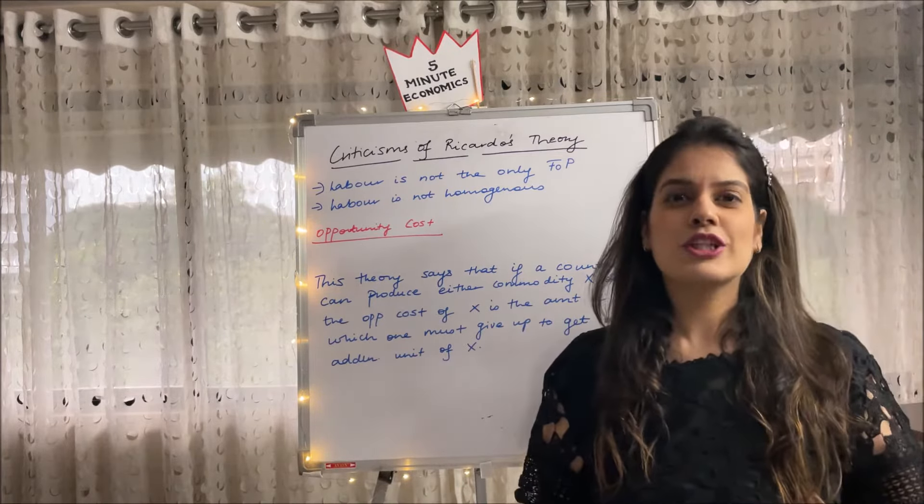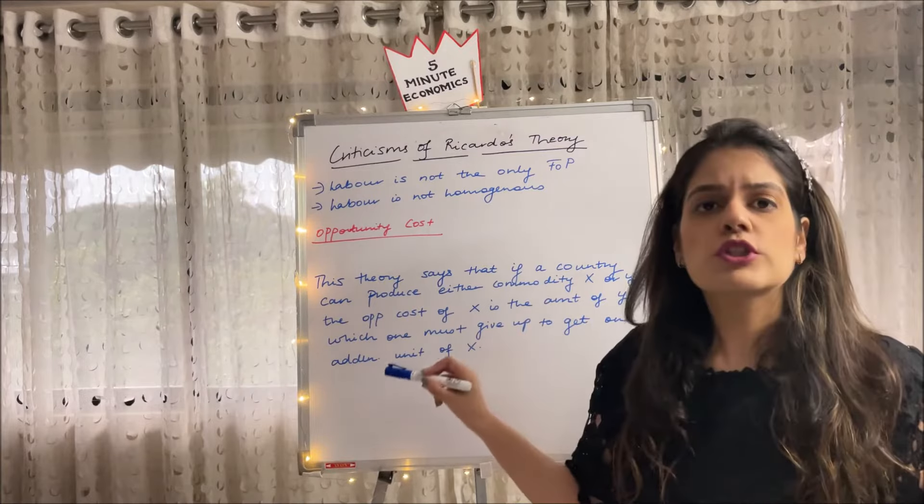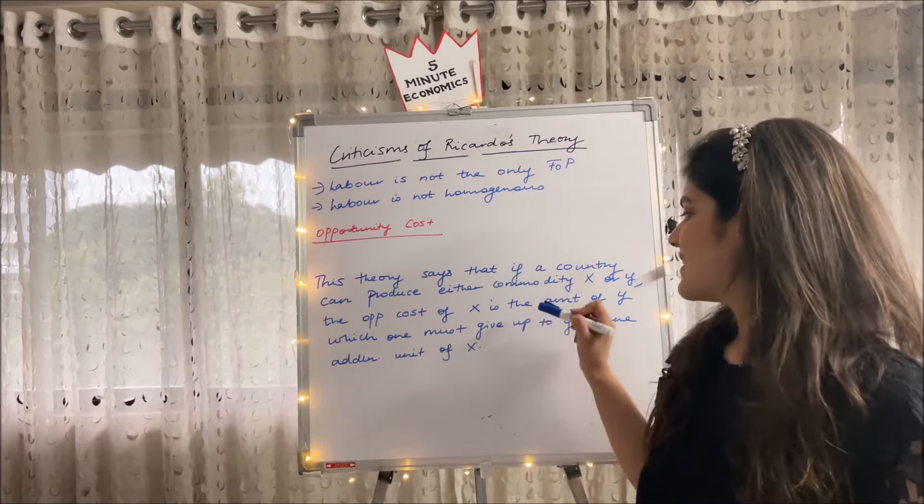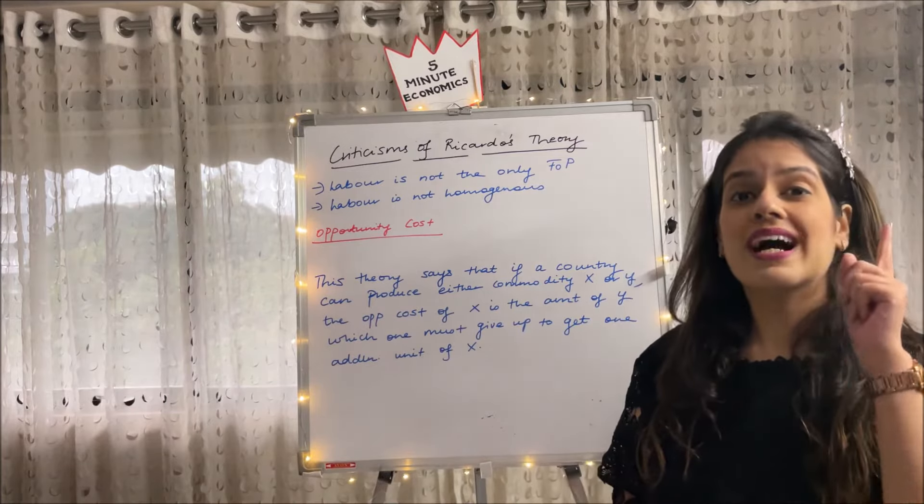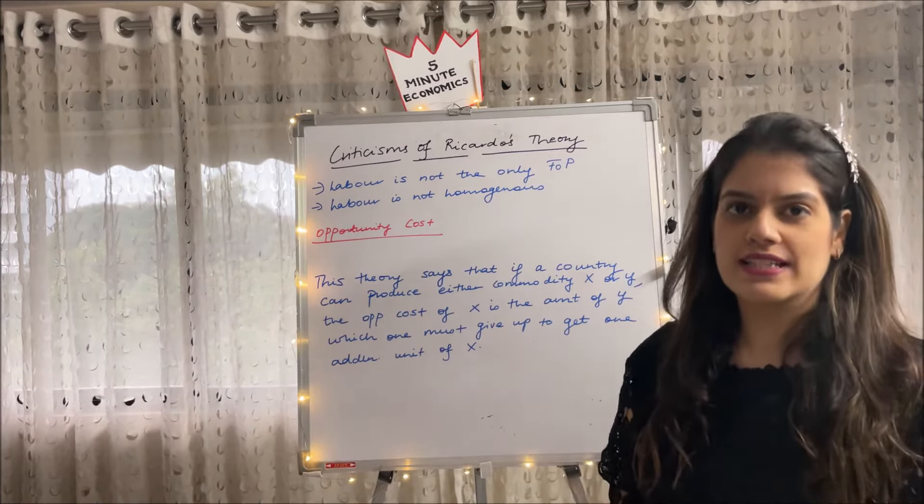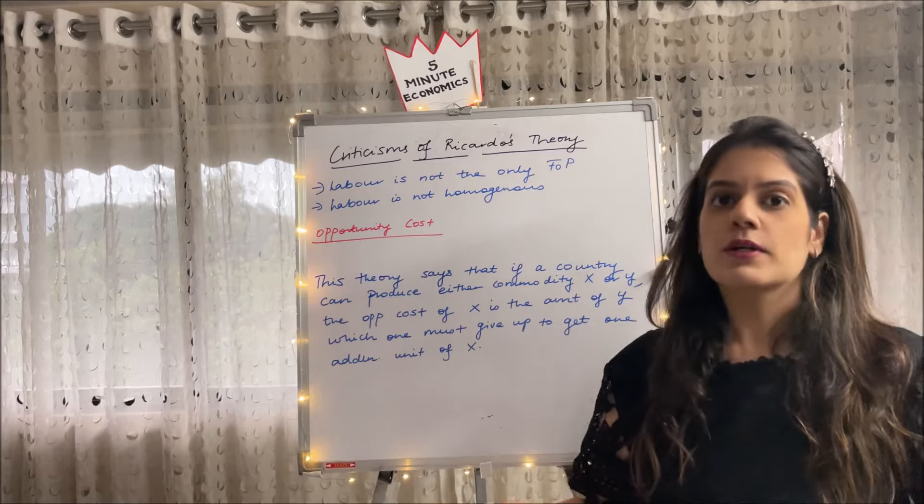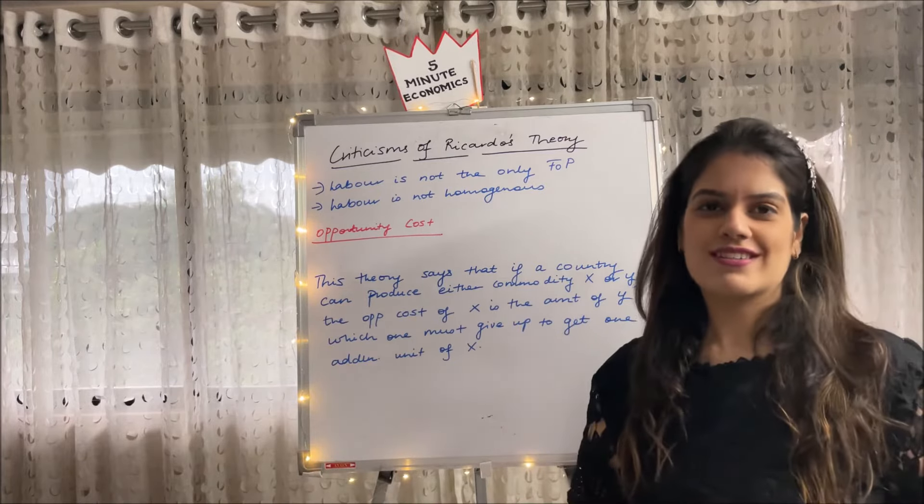So basically what does this particular theory, the Harberler's theory, state? It says that if a country can produce either commodity X or either commodity Y, the opportunity cost of X is the amount of Y which one must give up to produce one additional unit of X. So how much Y we are giving up to produce X is our opportunity cost.